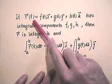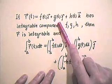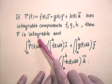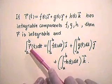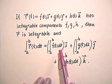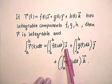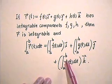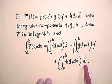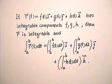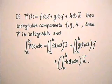If r(t) = f(t)i + g(t)j + h(t)k has integrable components f, g, and h, then little r is integrable, and the definite integral from a to b of r(t)dt is computed component-wise. That is, we integrate f from a to b — that's a number — multiply by vector i; integrate g from a to b, multiply by unit vector j; integrate h from a to b, multiply by unit vector k. That total sum gives the definite integral of r(t)dt from a to b. The same works for the indefinite integral.